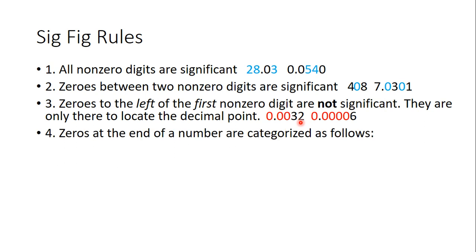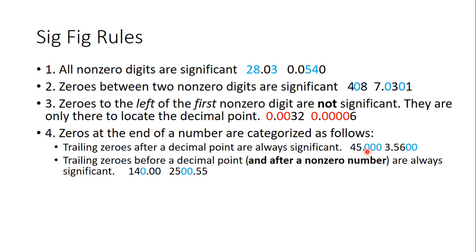How about zeros at the end of a number? Well, we have certain rules for these. If the zero is after a decimal point, all these zeros are always significant. If the zeros are before the decimal point but after a non-zero number, then they are significant.